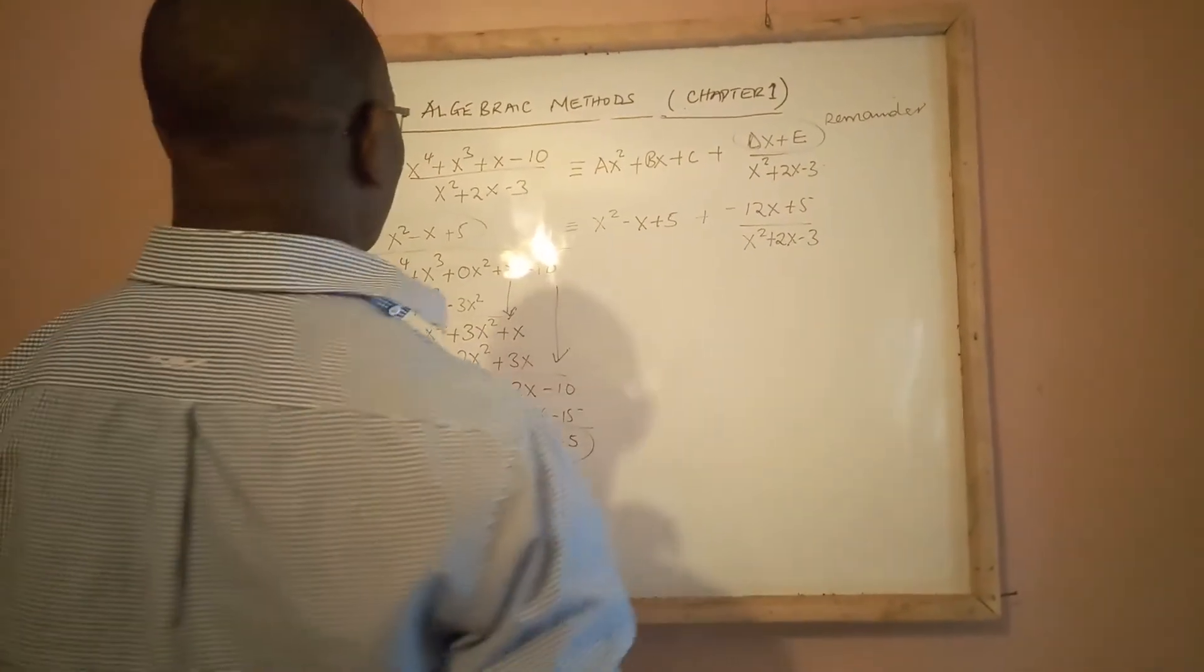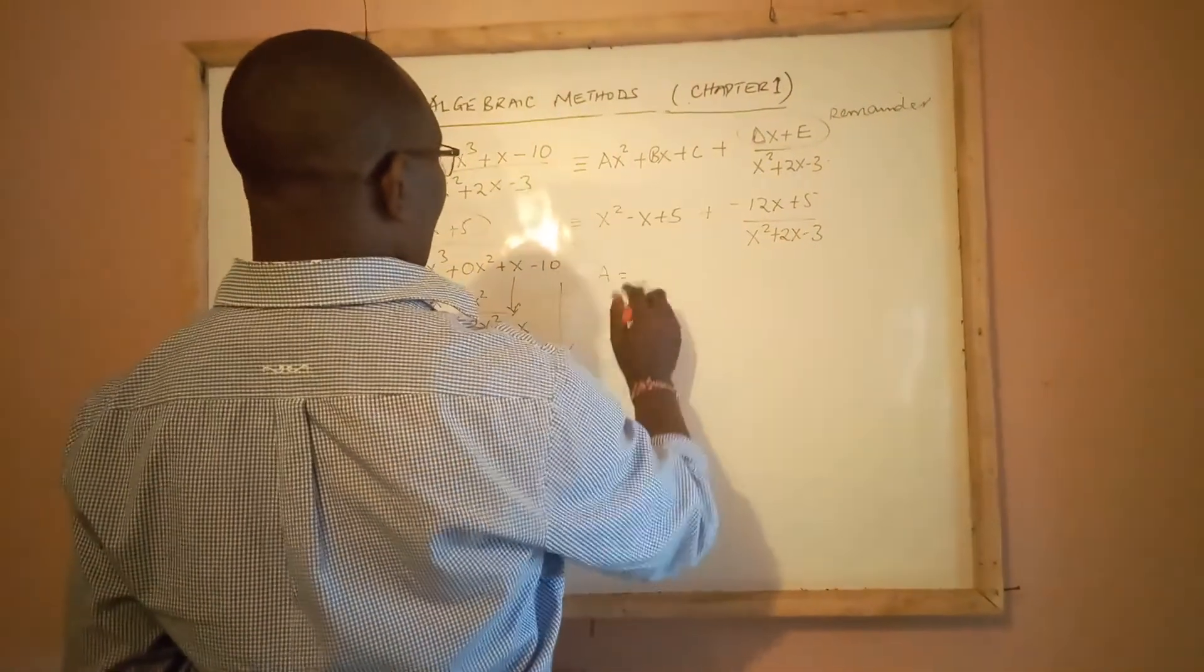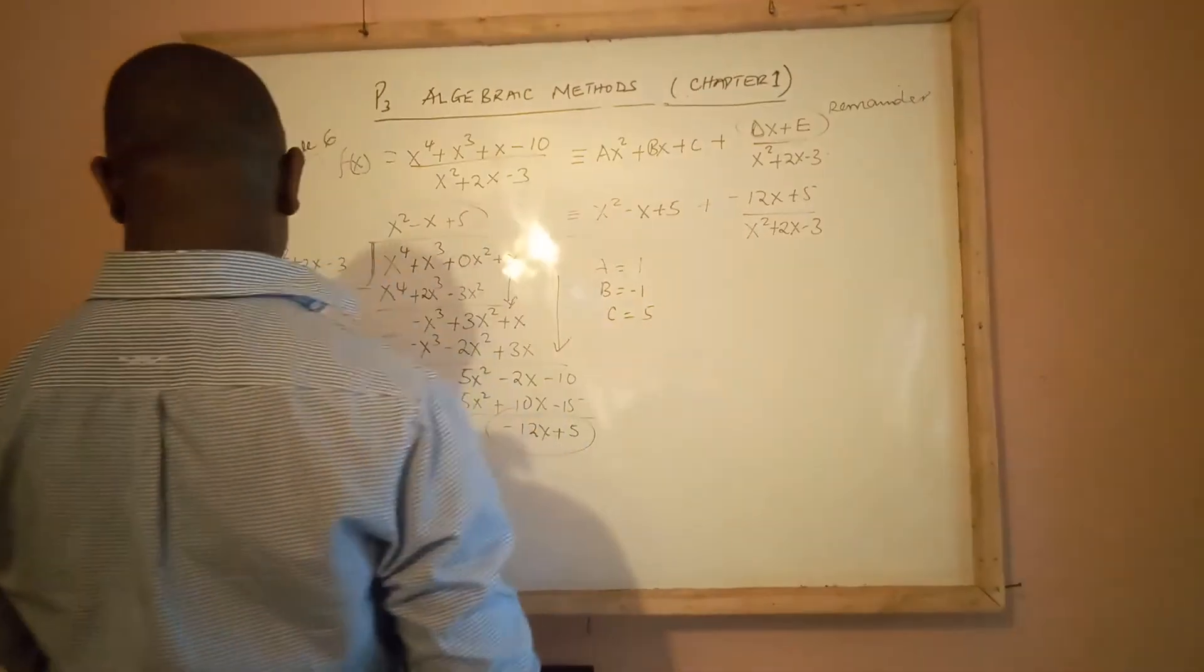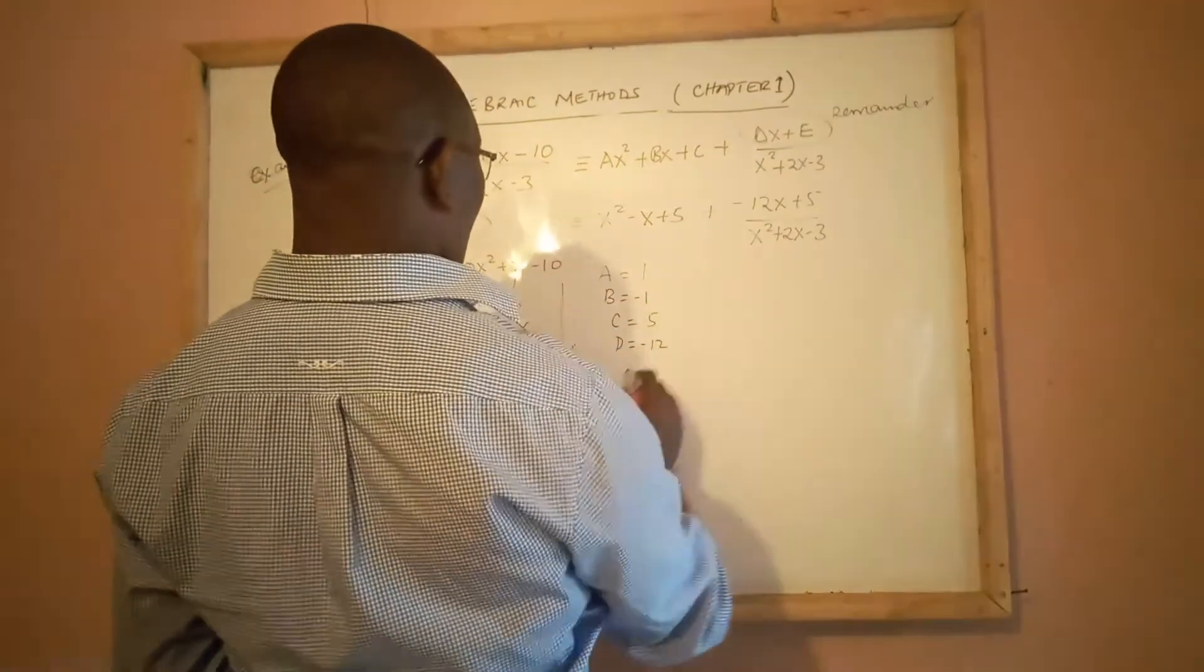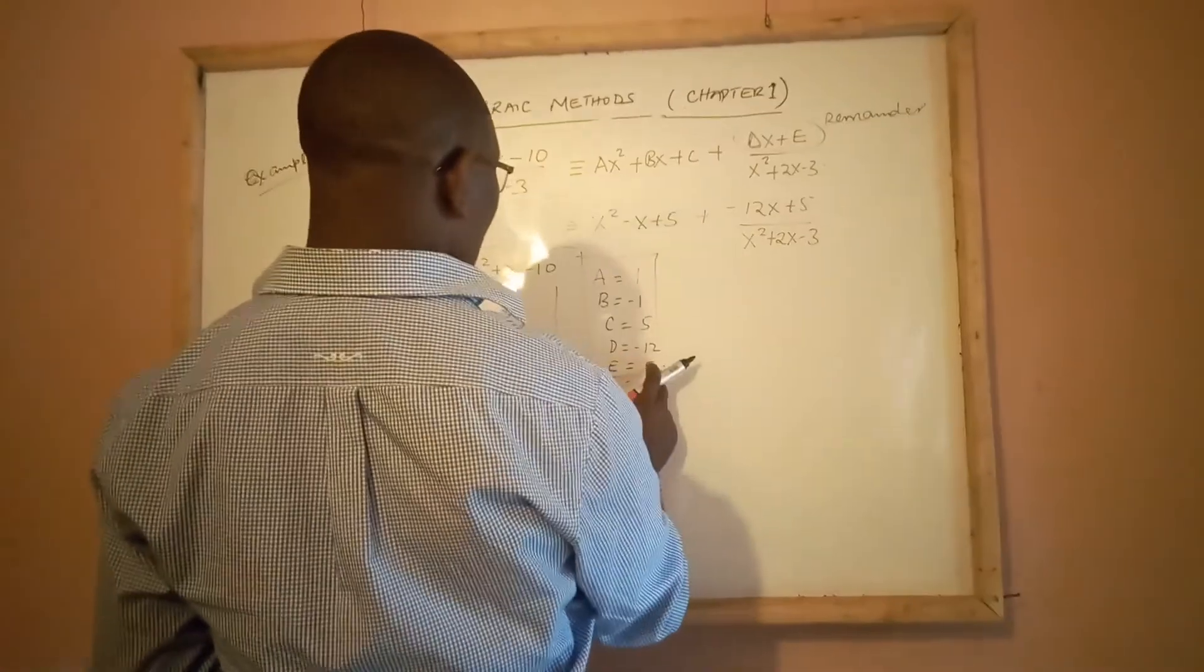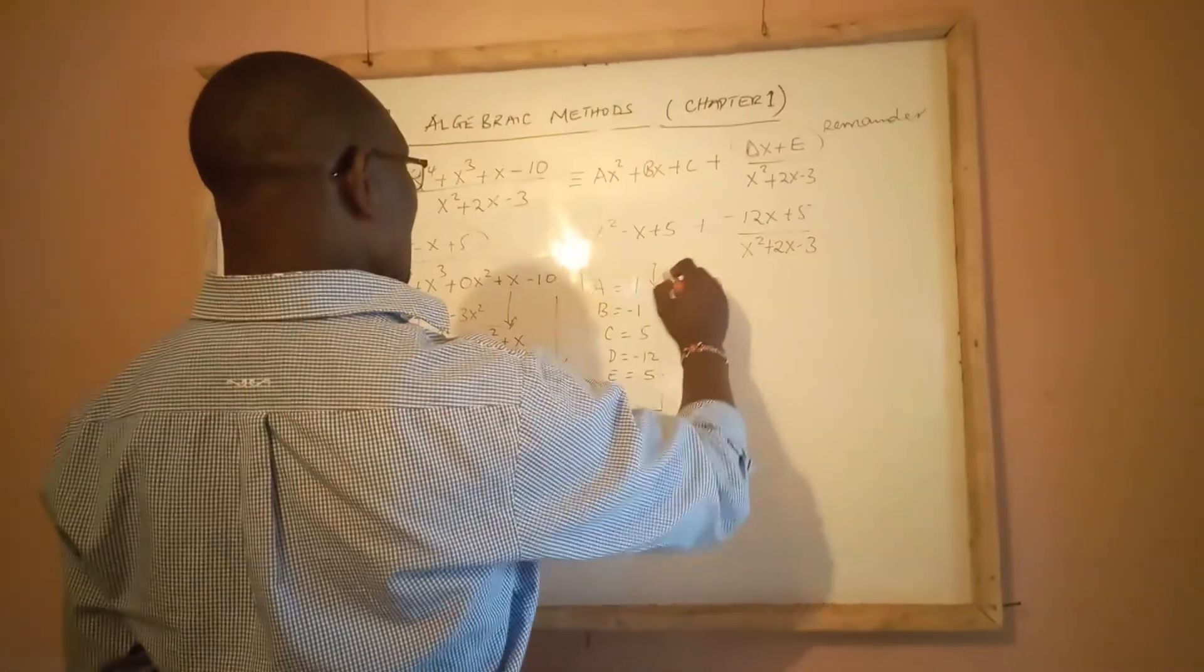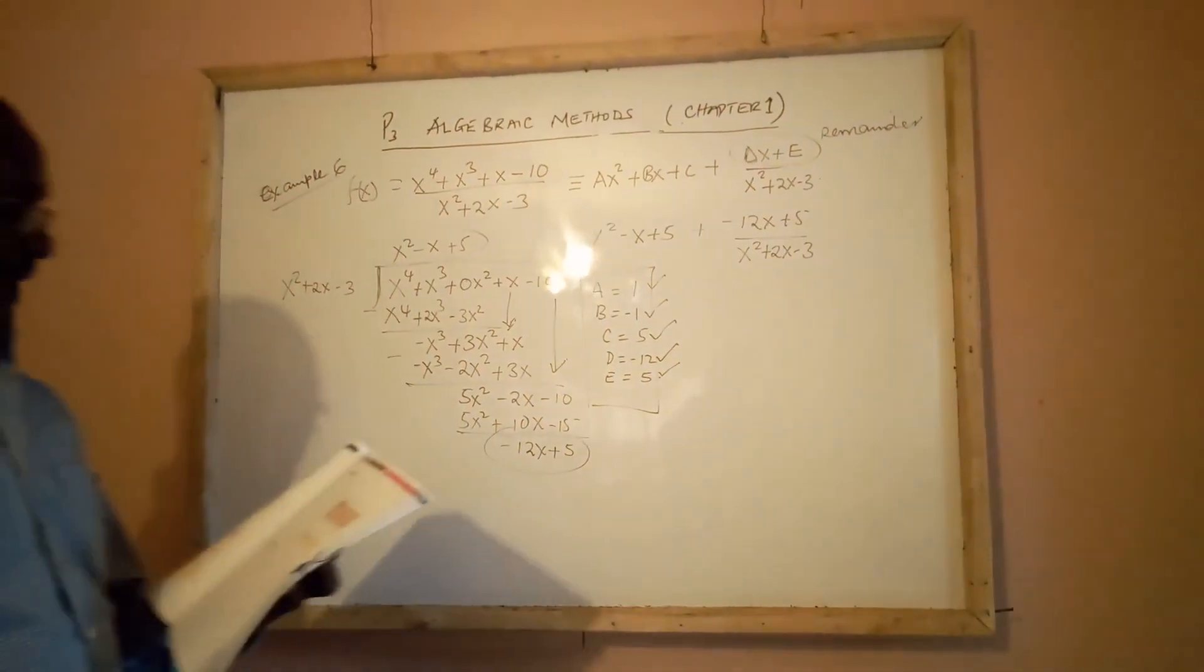Having written it that way, you can now compare this and this, and you can easily say your a is 1, our b is -1. You can see, this one compares with this, our c is 5. You can see what our d is: our d is -12, and our e is supposed to be 5. Yes, these are the values of the unknowns that we are supposed to find, but we could not find them if we did not now evaluate this one using the long division. And here we are: our a is 1, b is -1, c is 5, d is -12, and e is positive 5.